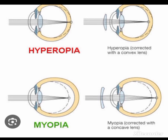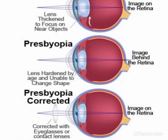The corrective measures for these refractive errors are as follows: hyperopia can be corrected by a convex lens. Myopia can be corrected by a convex lens. Presbyopia can be corrected by contact lenses or eyeglasses, as it occurs due to the aging process.